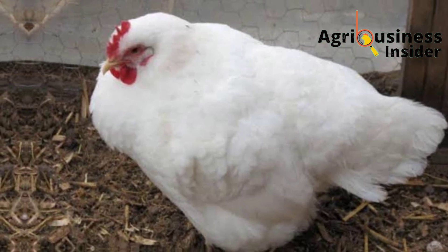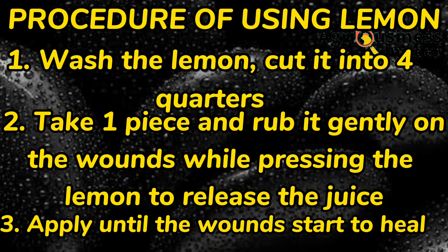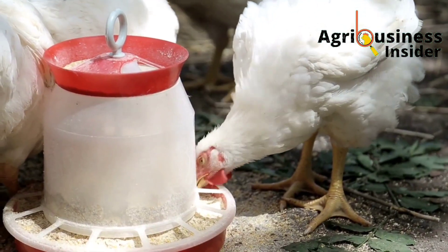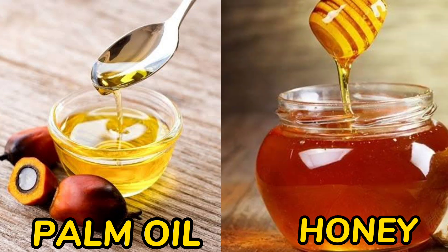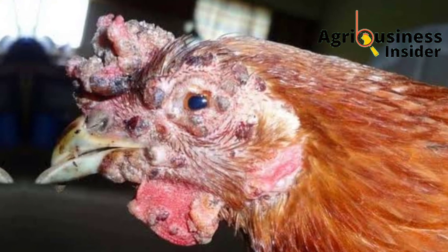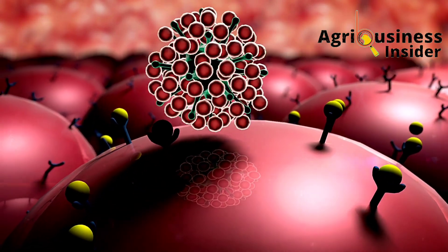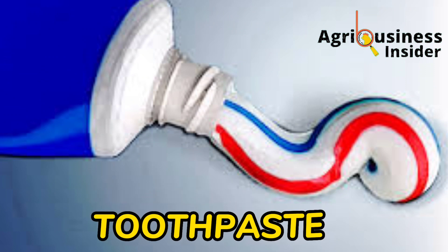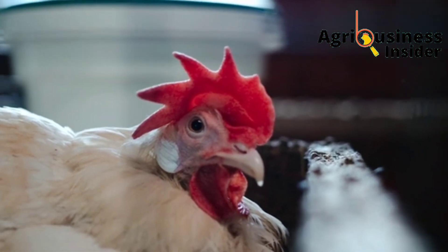The first natural treatment to use is lemon. The lemon fruit contains ascorbic acid which is very effective in killing this virus. The second important organic treatment for fowl pox is palm oil and honey. The palm oil and honey mixture is applied on the wounds caused by the fowl pox, which helps them to heal faster and also prevents the entry of other disease-causing microorganisms through these wounds. The third important organic treatment is toothpaste. Toothpaste contains fluoride which, when applied on the wounds caused by fowl pox, helps to kill the pox virus leading to faster recovery and healing.